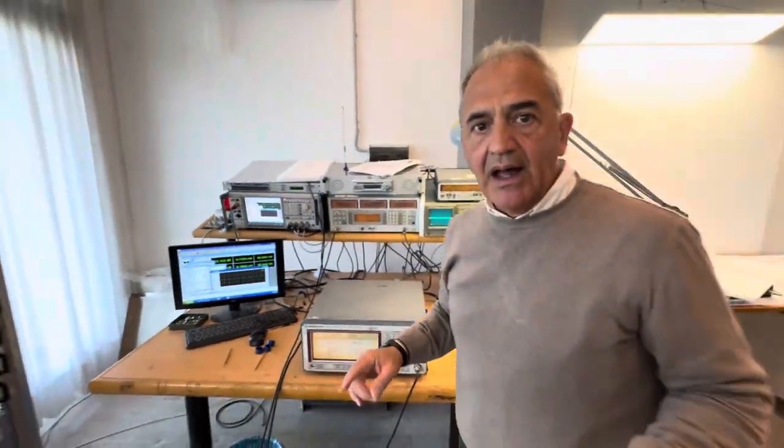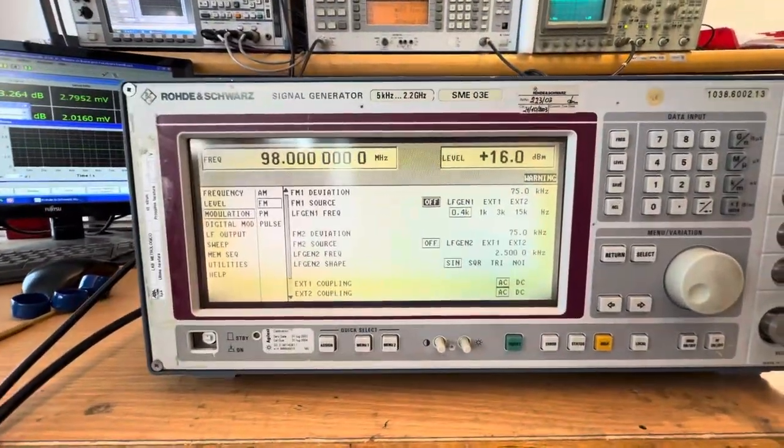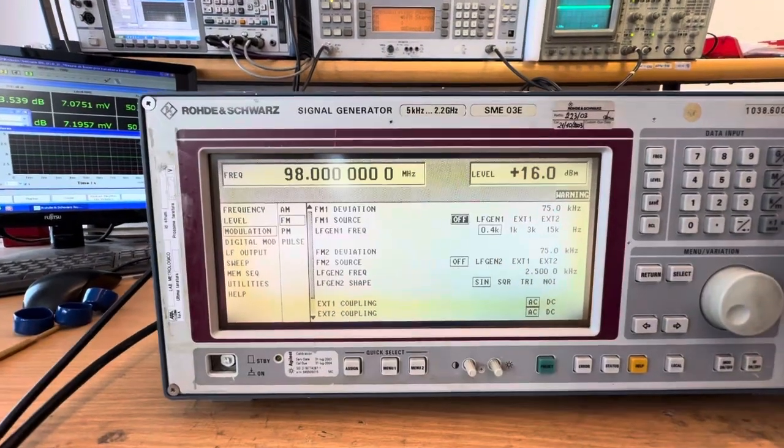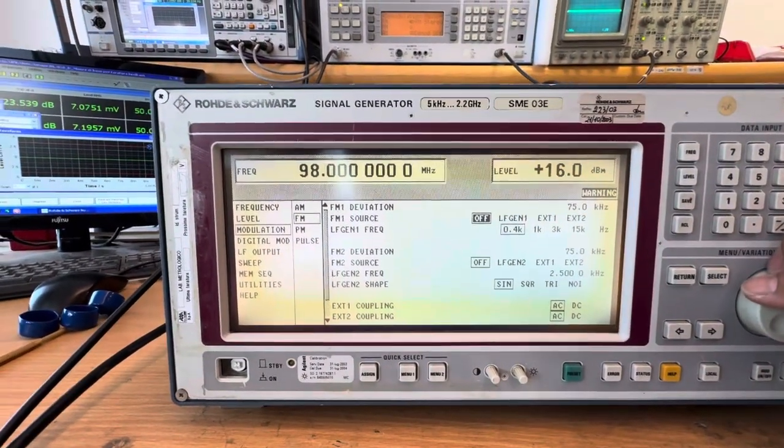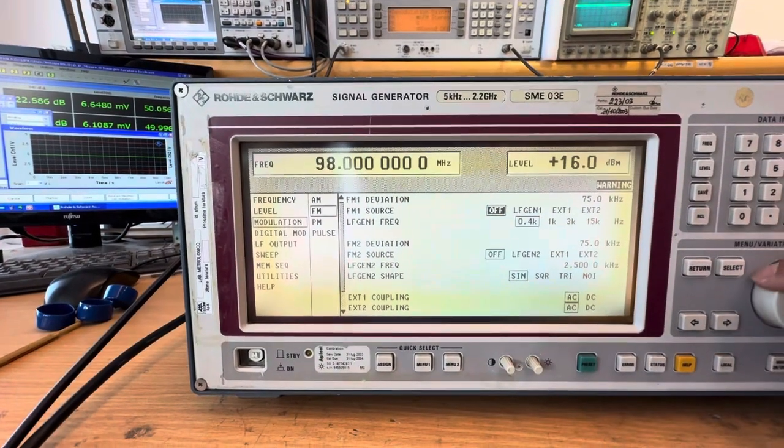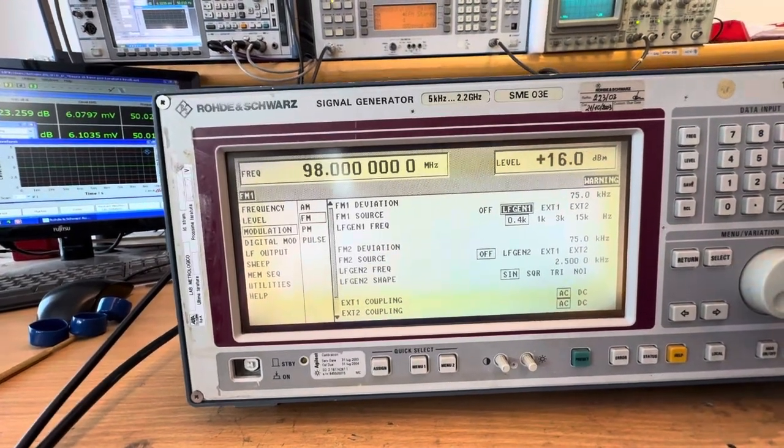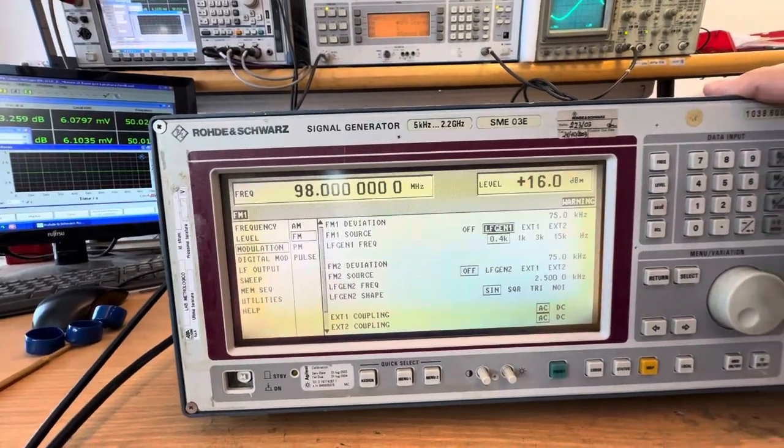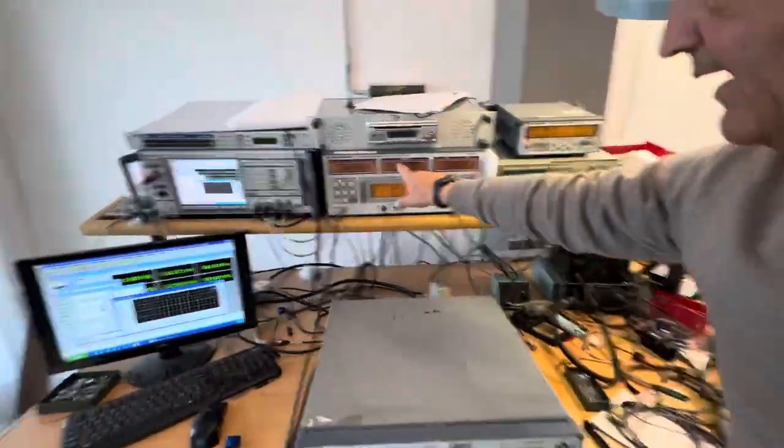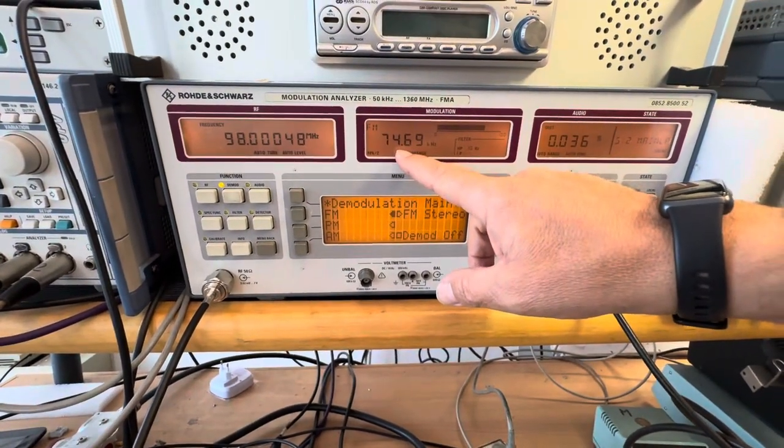Now I will enable in the generator the FM modulator, just to show you how it works in FM. So I have FM source and I will put on the feature. Here. Okay. Now we can see here that we are producing a deviation of 74 kilohertz.